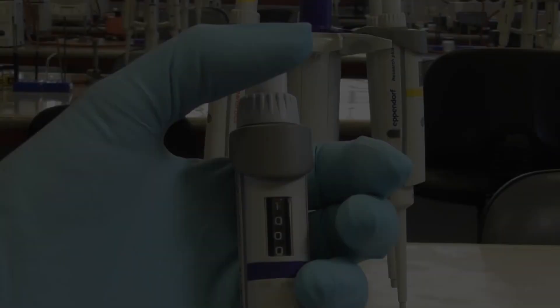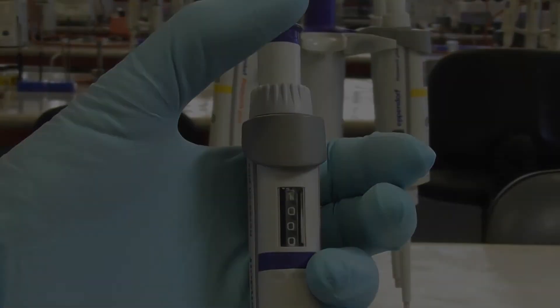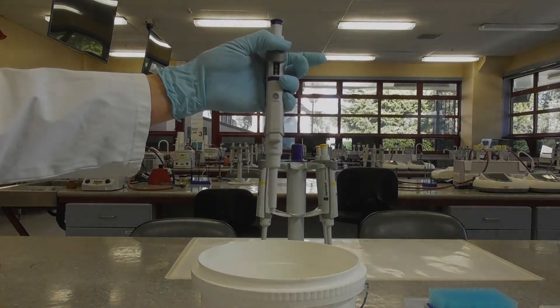To eject the used pipette tip, press the ejector button at the top of the pipette and eject the used tip into the waste bin.